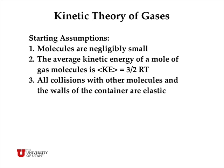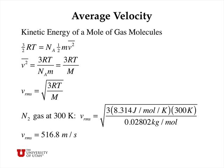The kinetic theory of gases assumes that molecules are negligibly small, the average kinetic energy of a mole of gas is 3/2 RT, and all collisions are elastic. On a molecular basis, that's Avogadro's number times one-half mv squared. Solving for v squared gives 3RT over m, where m is the molar mass. Taking the square root gives the root mean square velocity: the square root of 3RT over m. For nitrogen gas at 300 kelvins, the root mean square velocity is 516.8 meters per second.